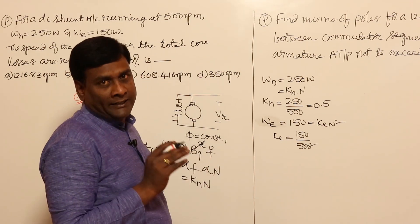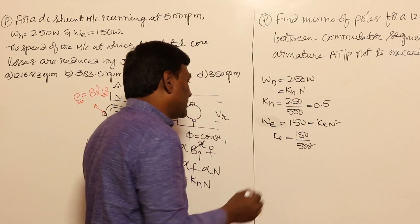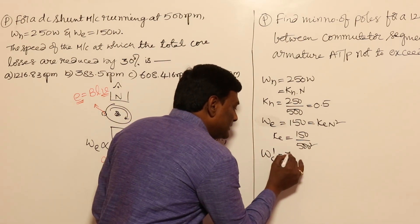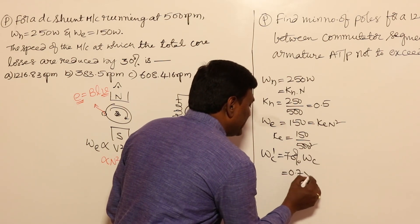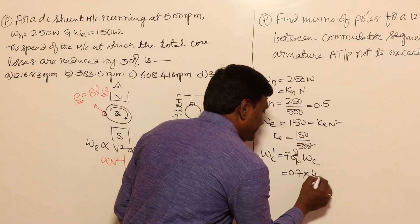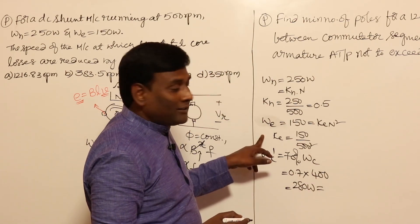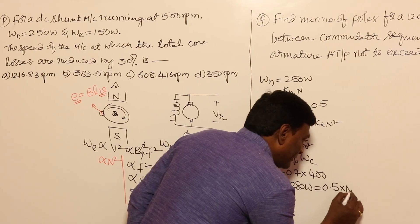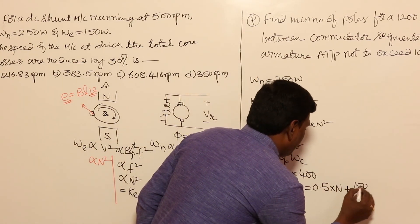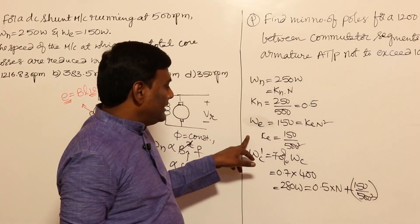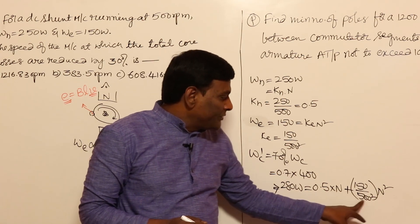The question asks for the speed at which total core loss is reduced by 30%, i.e., reduced to 70% of the original. Original total core loss = 250 + 150 = 400 W, so the new total = 0.7 × 400 = 280 W. Setting up the equation: k_h × N + k_e × N² = 280, which gives 0.5N + (150/250000)N² = 280.